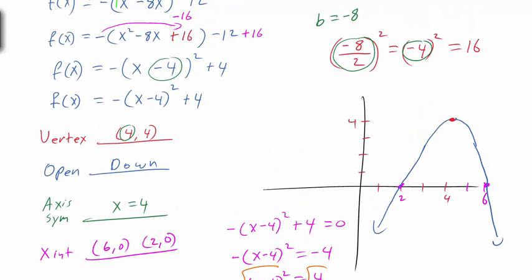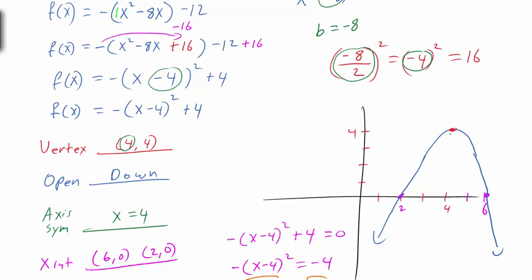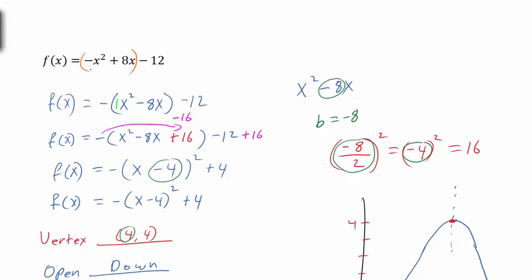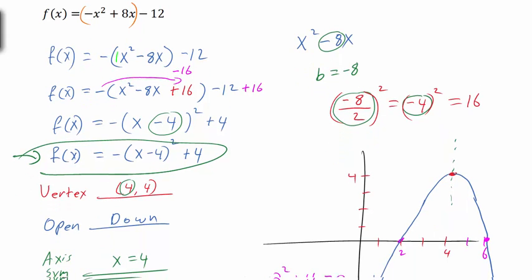So we found the vertex at (4, 4), x-intercepts at 2 and 6, and axis of symmetry at x = 4. We took -x² + 8x - 12, rewrote it in standard form, and once we had standard form we were easily able to identify all these features.